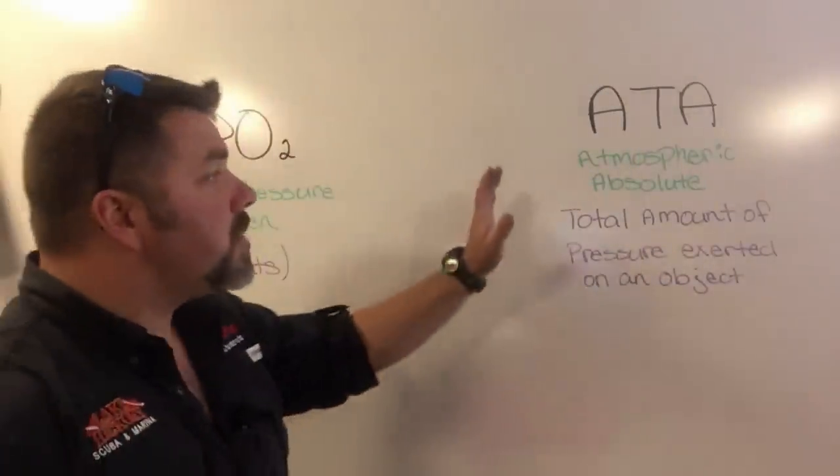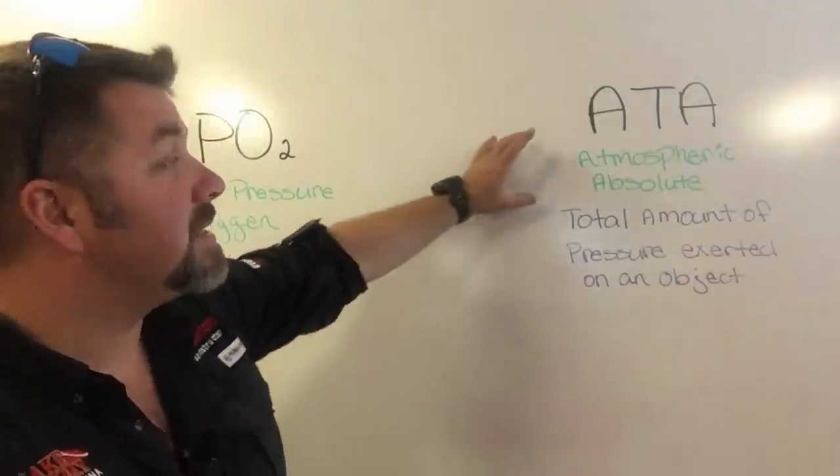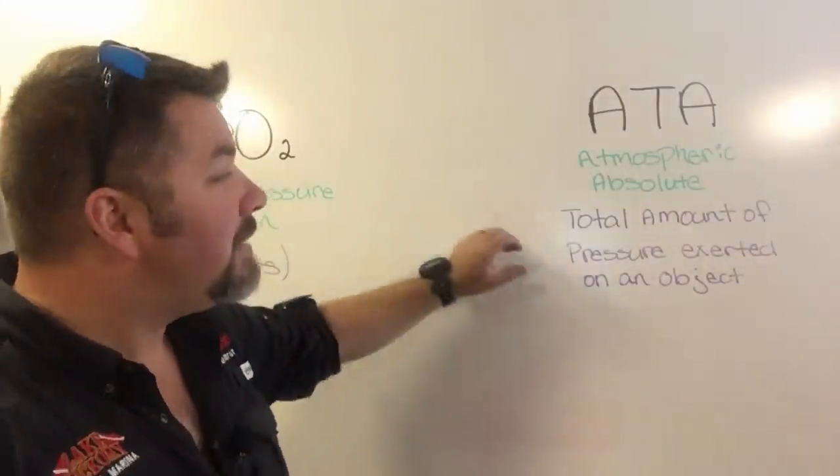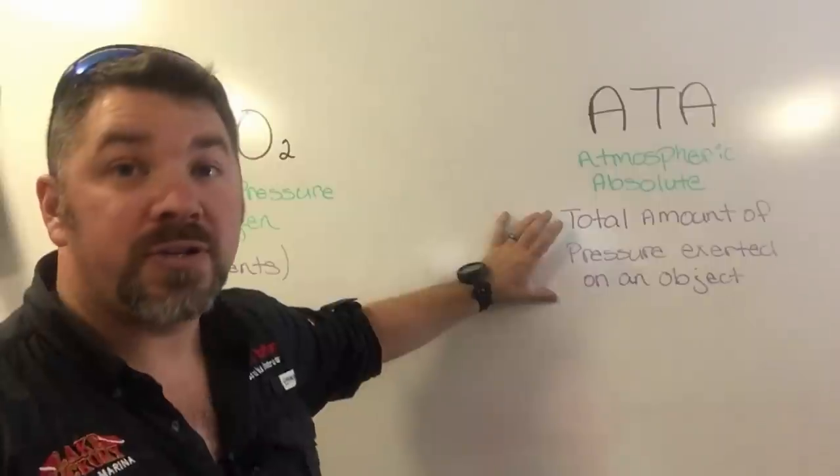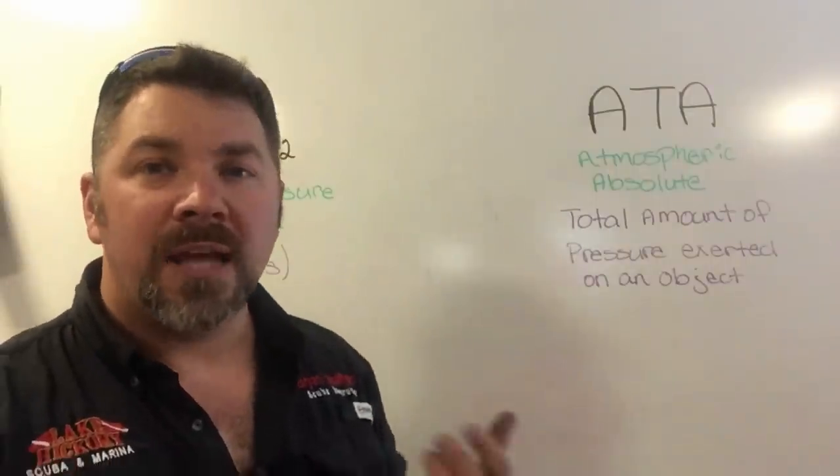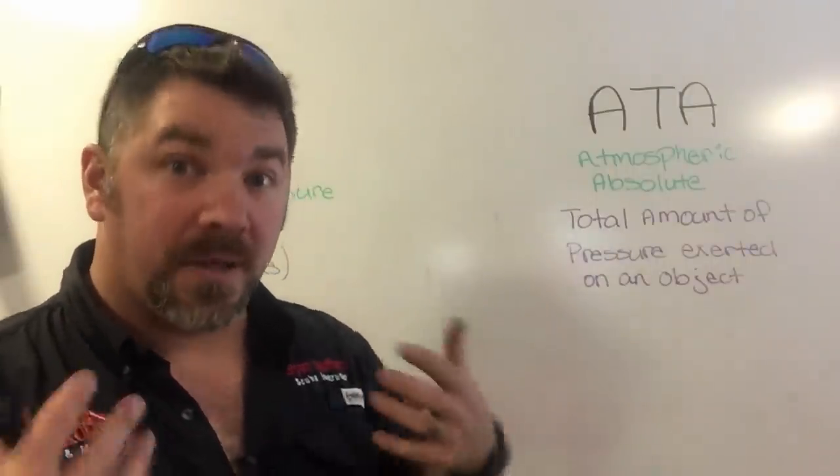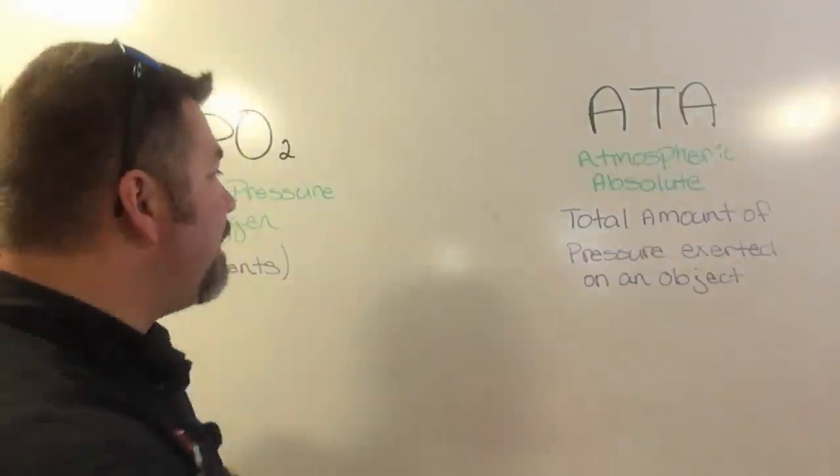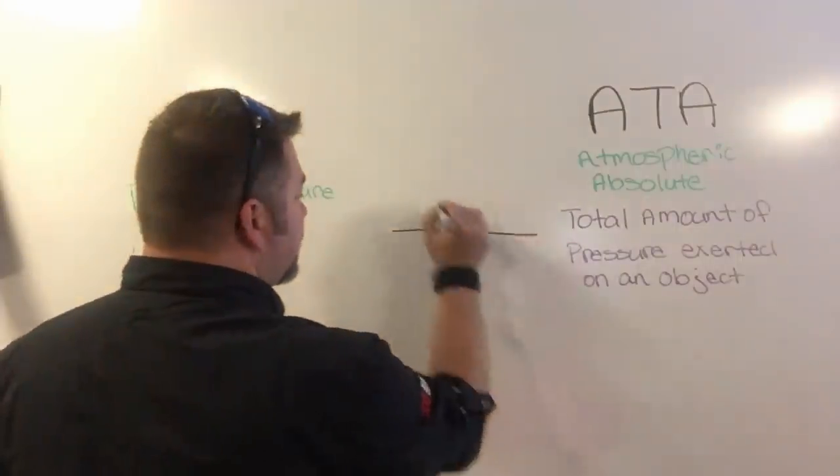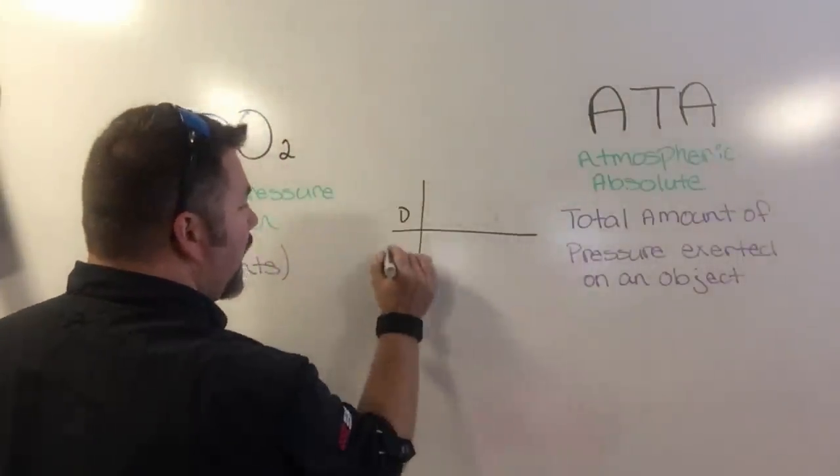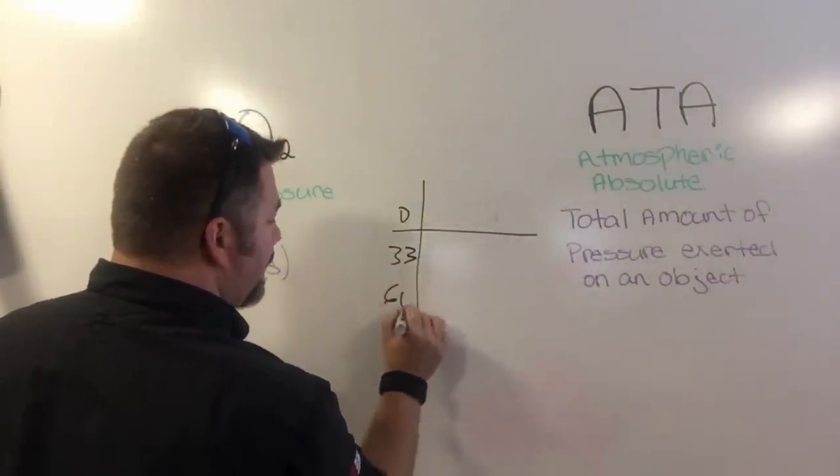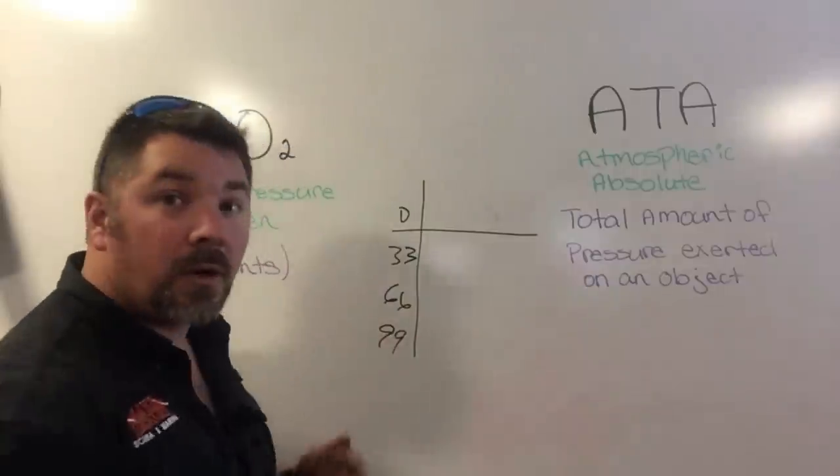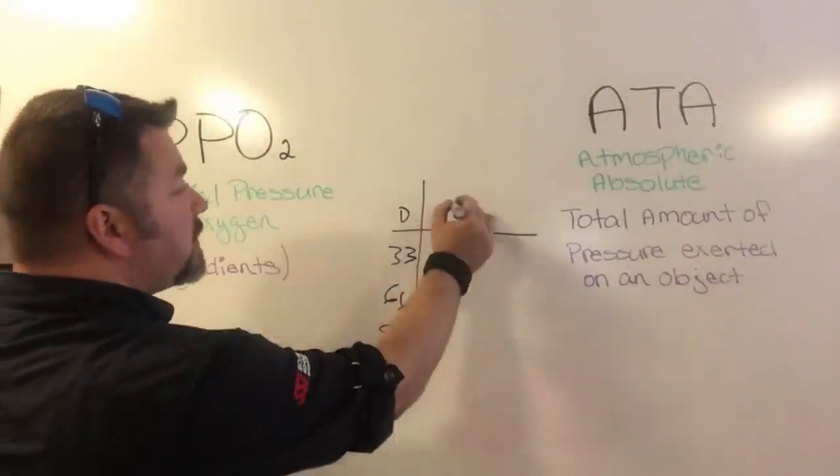Jumping over to ATA, or what I simply say is atmospheric absolute, that is the total amount of pressure exerted on an object. We're going to say the object is us, the body of us as a diver. The easiest way to look at this is to go back to our open water class and look at the atmospheric absolute chart.